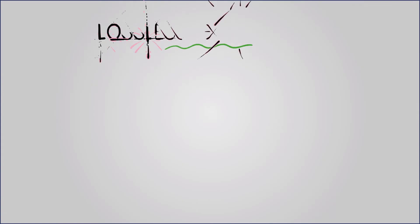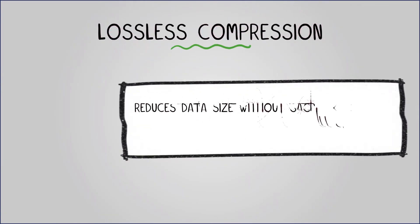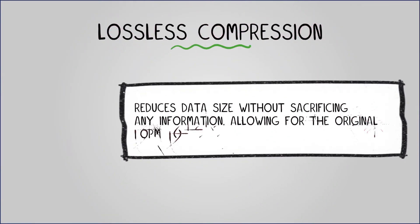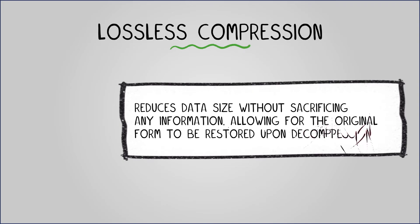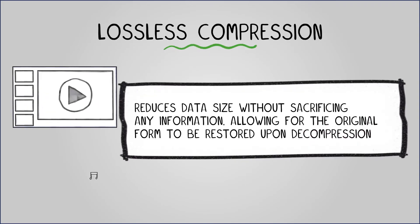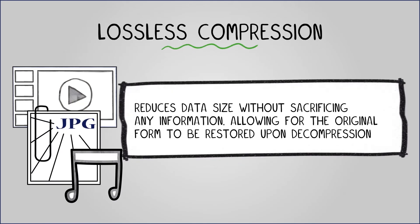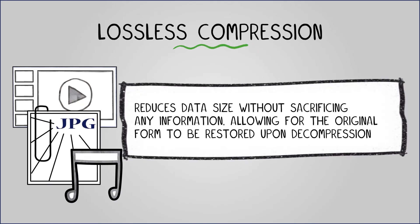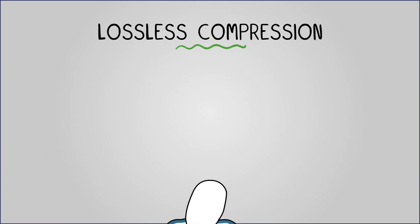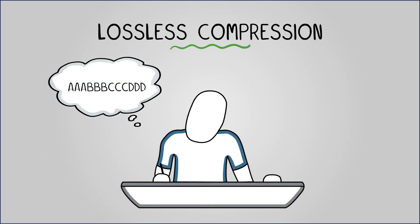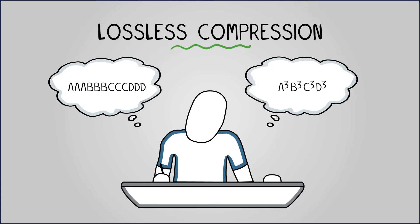Lossless compression reduces data size without sacrificing any information, allowing for the original form to be restored upon decompression. It is employed in various image, video, audio, and document formats, such as PNG and zip files. A basic example of lossless compression is encoding repeated characters in text. This shortened version saves storage space and can be reverted to its original form.